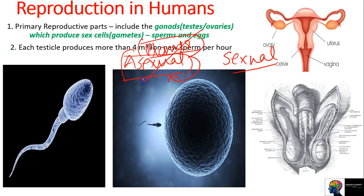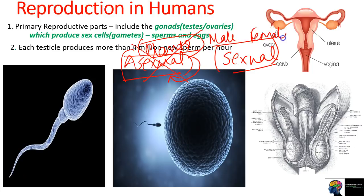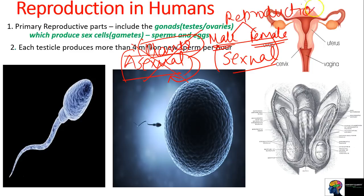Humans are not asexual. We will learn what sexual reproduction is. Sexual means one male and one female. When male and female unite during intercourse, that is reproduction in humans - it is sexual reproduction.